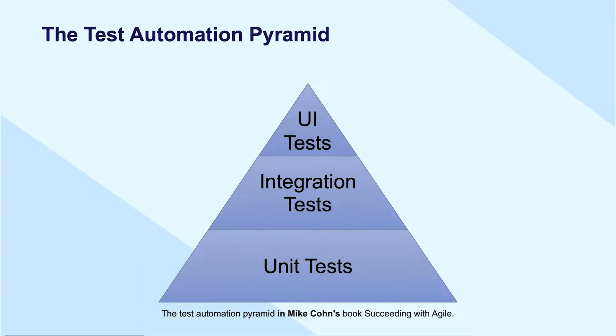Next up, system testing is where the complete system is validated for both functional and non-functional aspects before moving to the last level. User acceptance testing is conducted by clients and end users to validate whether the application meets their expectations. Although all of these testing activities can be done manually or automated, acceptance testing is preferred to conduct manually.